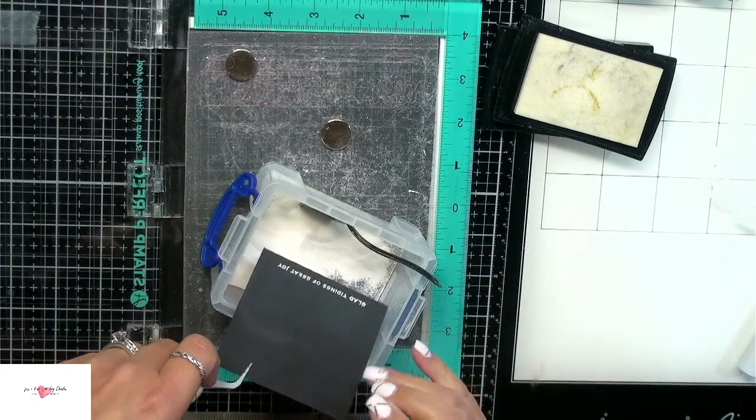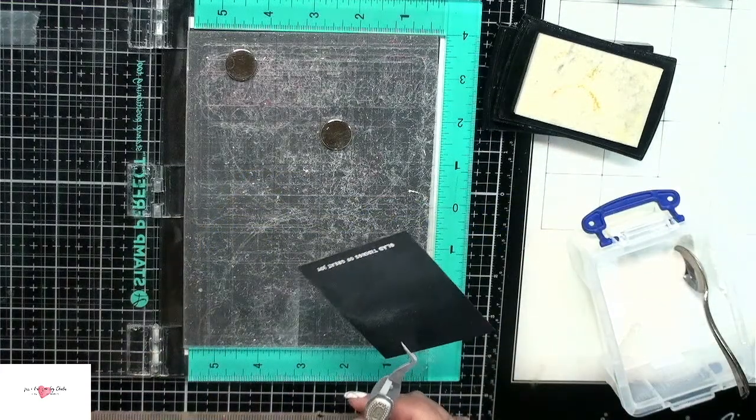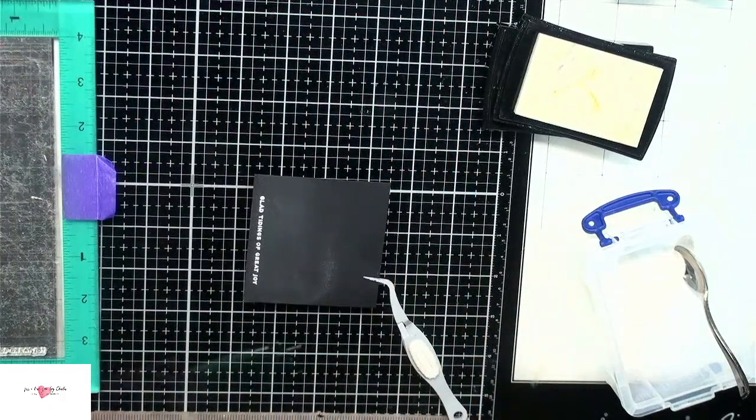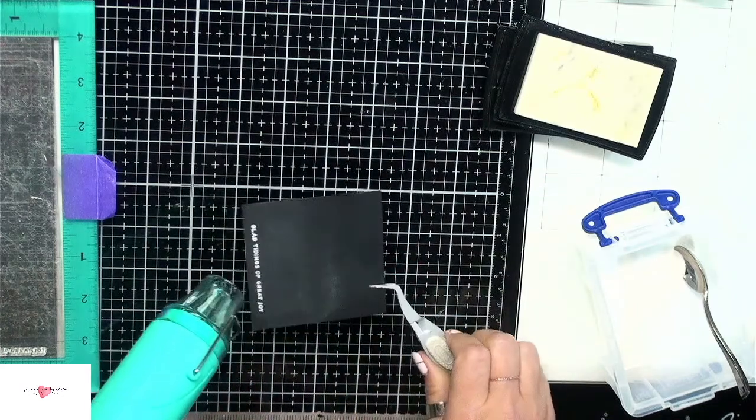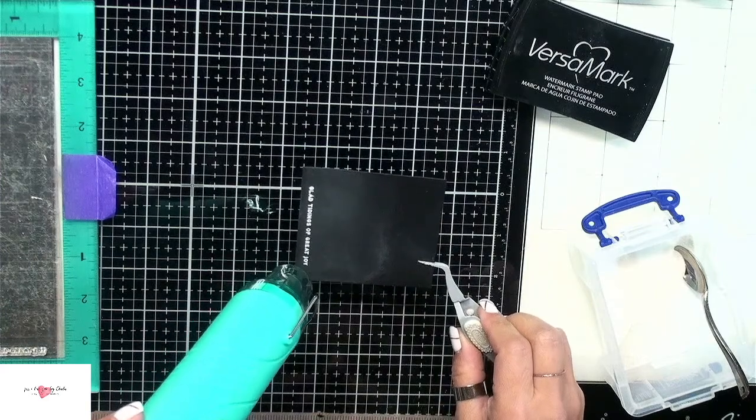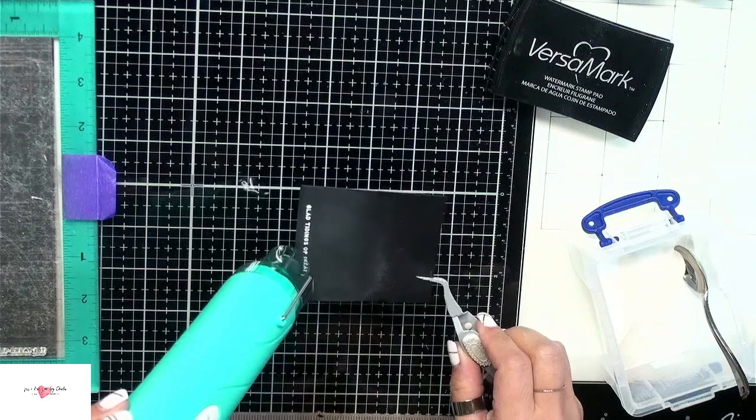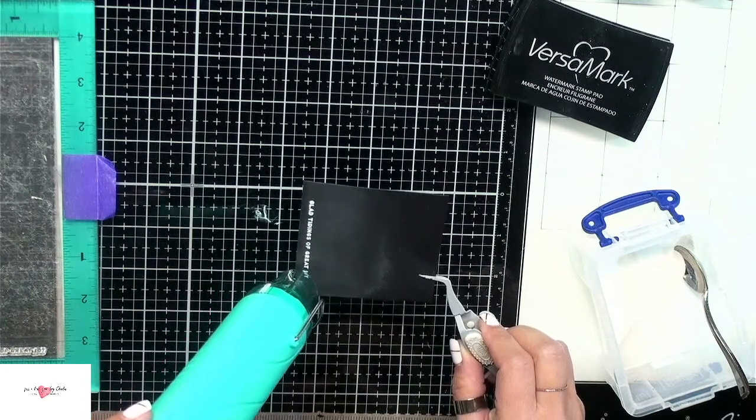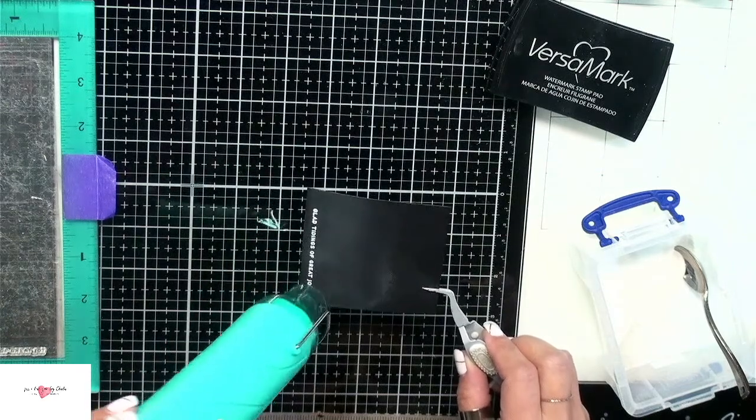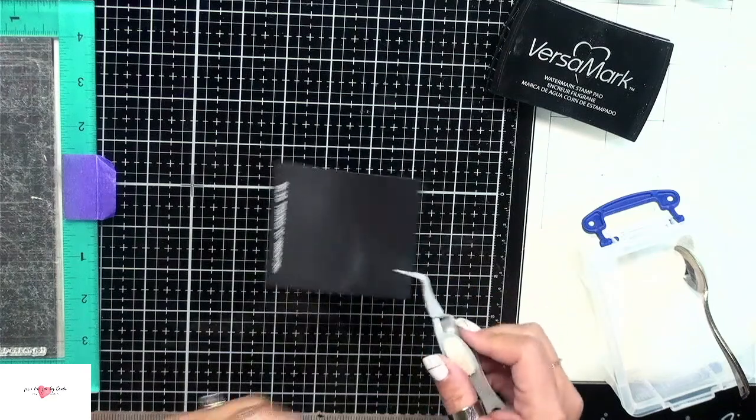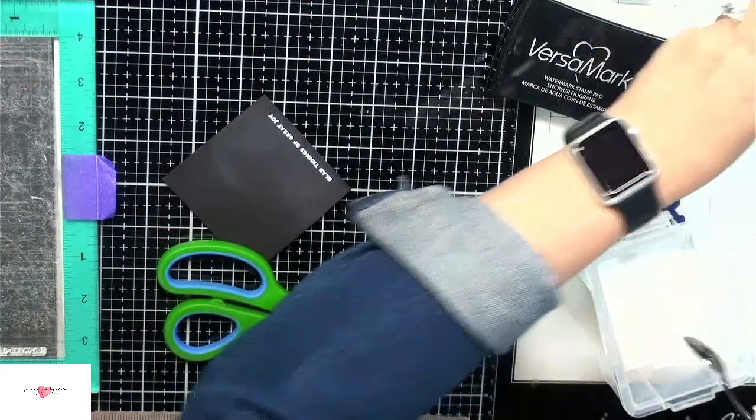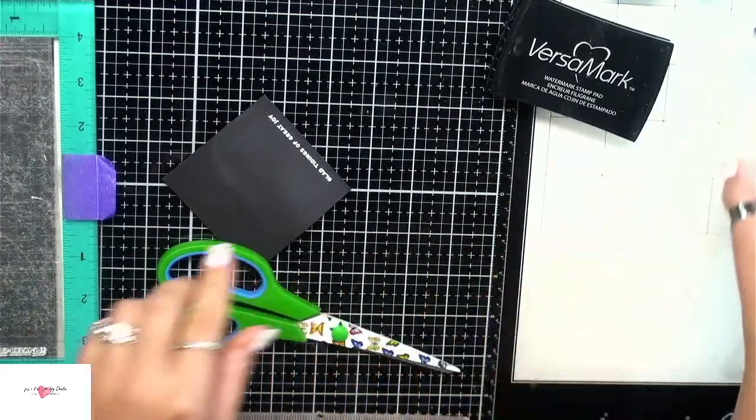There's something magical about embossing powder to me. When you heat it up and watch it, I just think it's so much fun. So let's go ahead. Hopefully this isn't going to be too loud for you guys. I'm just going to move this out of the way. I've got my heat tool here and we'll heat this up. So that didn't take too long at all. Now what I want to do is trim this down. I'm just going to first put this away before I dump it because that's happened before.